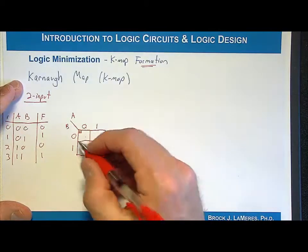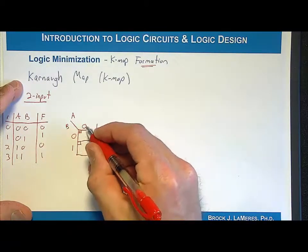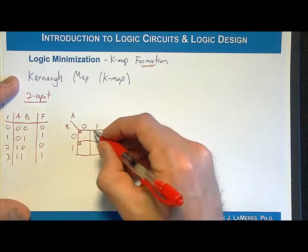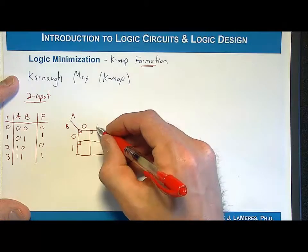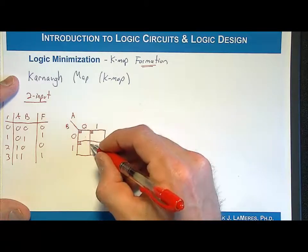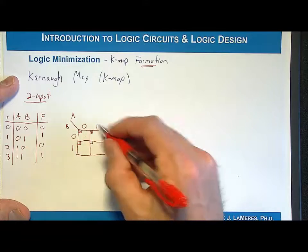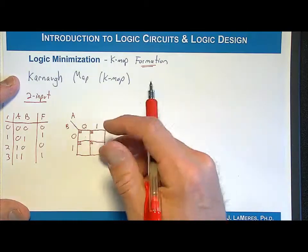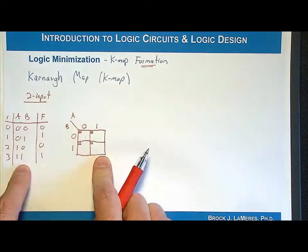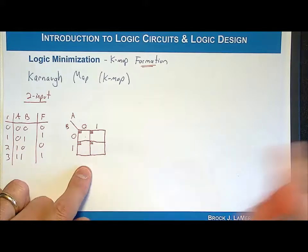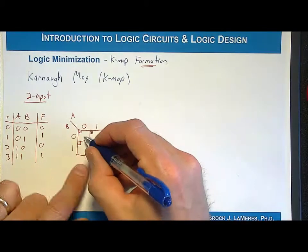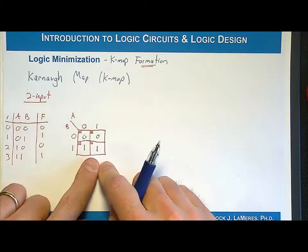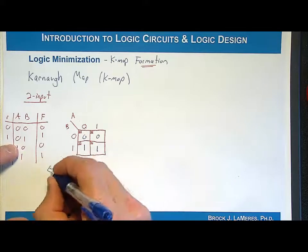Continuing: the cell where A is 0 and B is 1 is cell 1, corresponding to row 1. Where A is 1 and B is 0 is row 2 or cell 2. And where A is 1 and B is 1 is row 3. This is the K-map equivalent to an empty truth table. Then we come along and put the outputs in: 0, 1, 0, 1. This is the exact same information, just in a grid format.